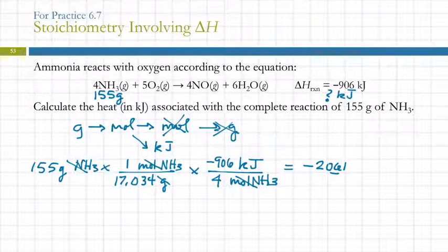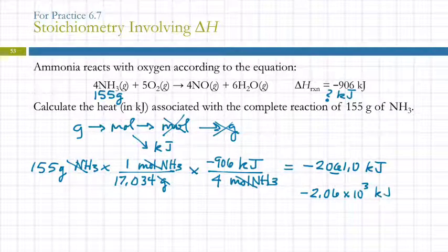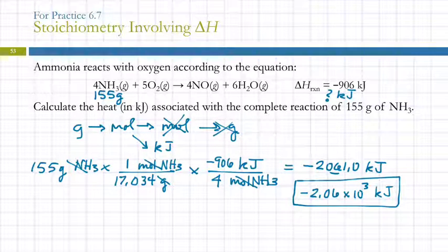I should have 3 sig figs here. And the unit is kilojoules. So we should round that. We're rounding in the tens place. And so it's best to put it in scientific notation. 2.06 times 10 to the third kilojoules. What about this negative sign? Do we need it? Yeah, we do. The question says calculate the heat associated. It doesn't say the heat released. It doesn't say the heat absorbed. It doesn't give us a direction. So then we need to use the sign to indicate the direction in our answer. So this is the heat associated with that chemical reaction. The negative tells us it was released.